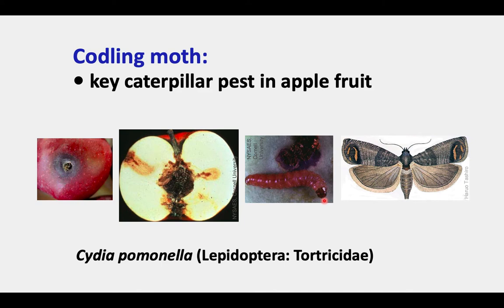It's a larva of this moth, and it is a caterpillar. We commonly call it a worm. Here is the adult moth on the right. It's very small — the length of a wing is only about a quarter of an inch. The scientific name is Cydia pomonella.